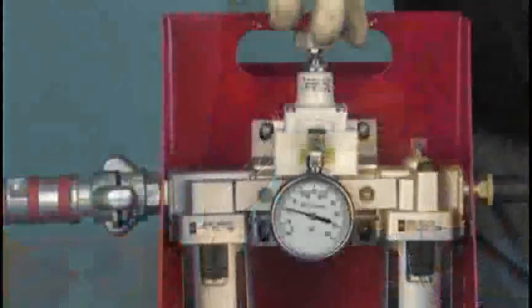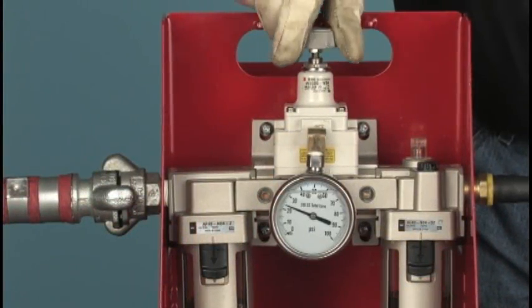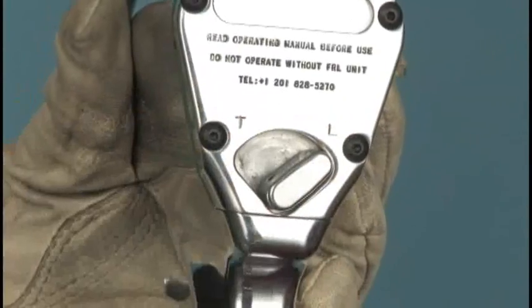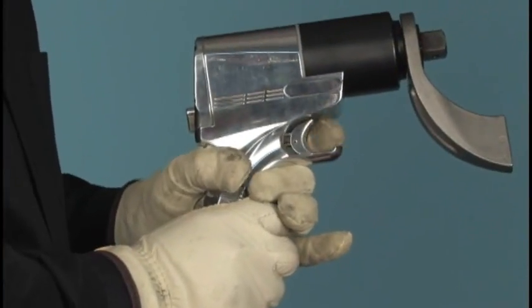Torque output is controlled by carefully metering the air pressure supplied to the tool. The direction of the tool, whether tightening or loosening, is set with the flick of a switch, while the trigger provides instant start and stop control.